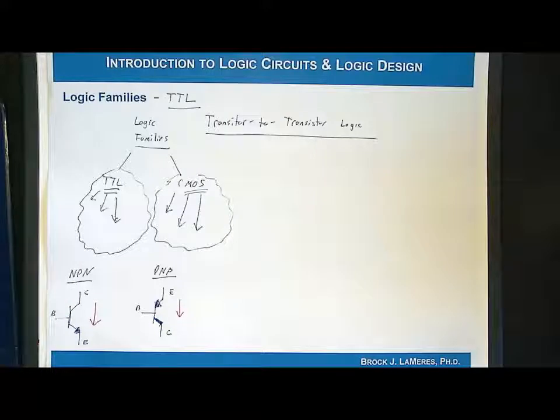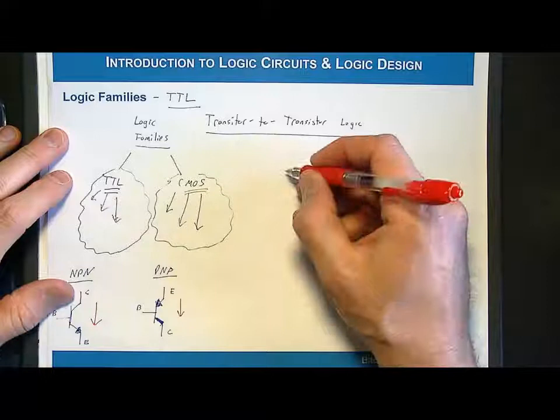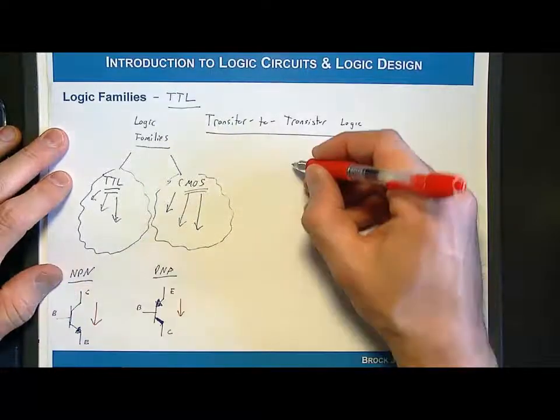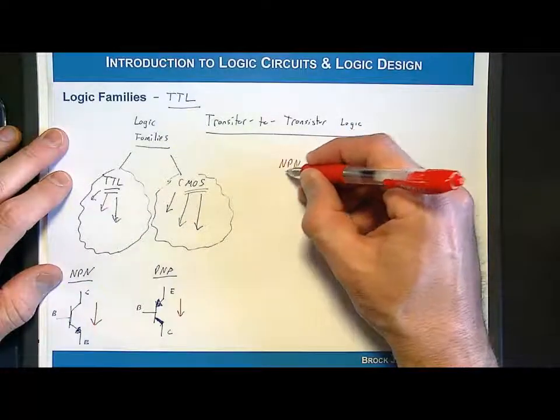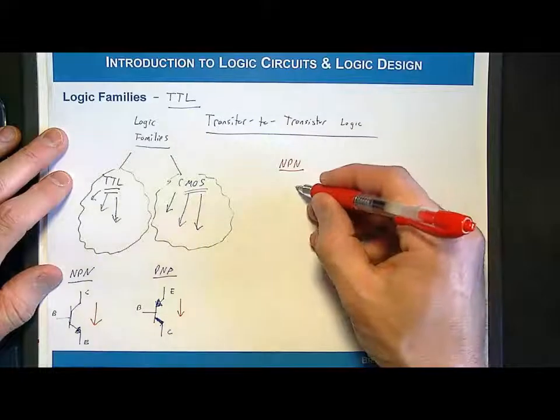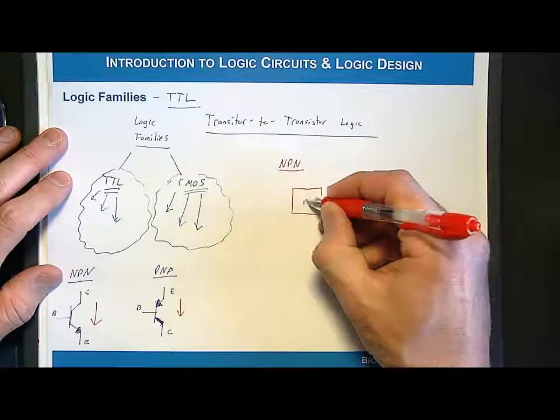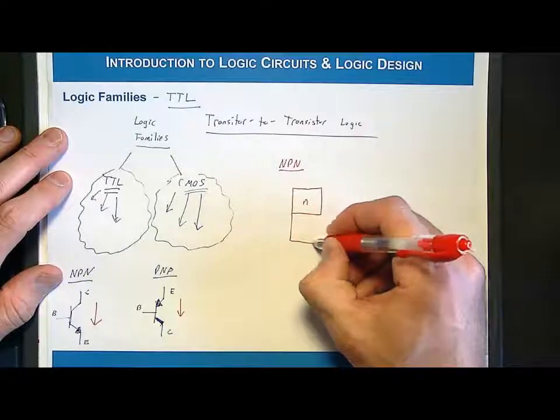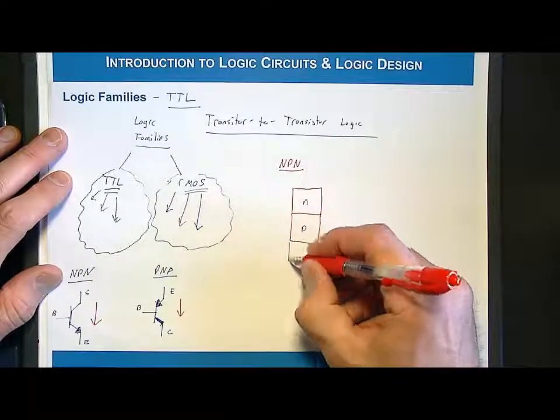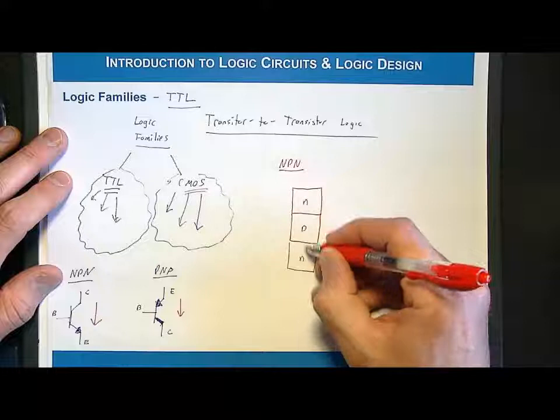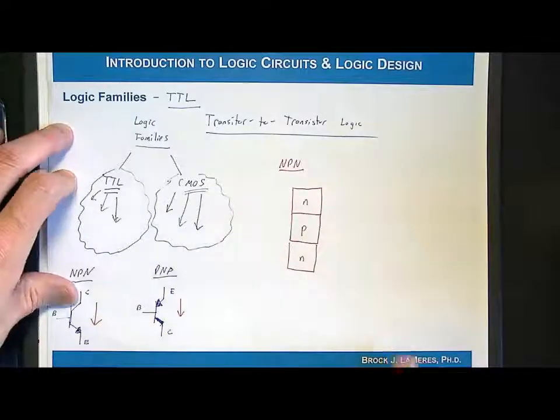This type of transistor has a different structure. Let's look at how it works, focusing on an NPN to start. What you do in an NPN is take an N region of silicon or semiconductor material, put a P type here, then put an N type here. That's where NPN comes from.